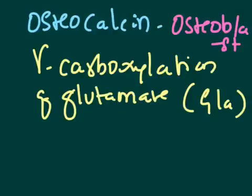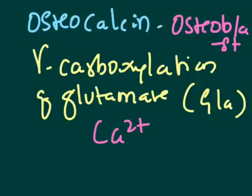Gamma-carboxylation of glutamate residues leads to an additional carboxyl group on the glutamate amino acid. Glutamate is already an acidic amino acid, and it takes up one more carboxyl group at the gamma carbon position. This makes extra negative charges available, and these negative charges bind with calcium ions. So carboxylated osteocalcin enhances the binding of calcium to hydroxyapatite crystals, thereby helping in bone formation.